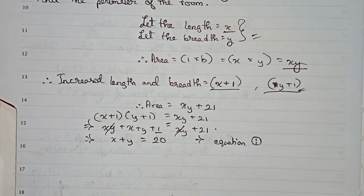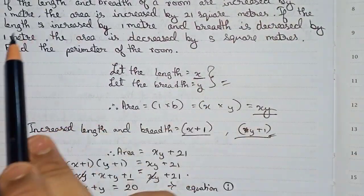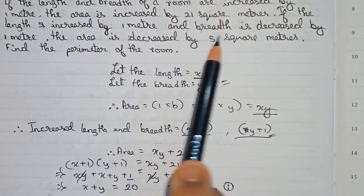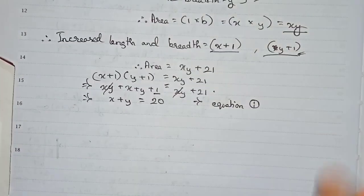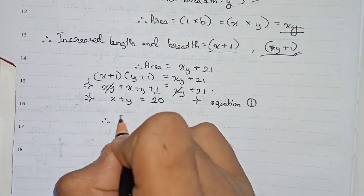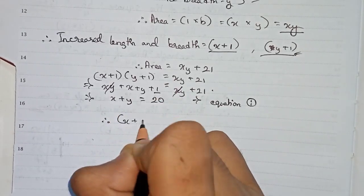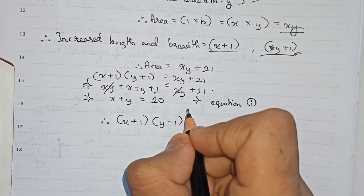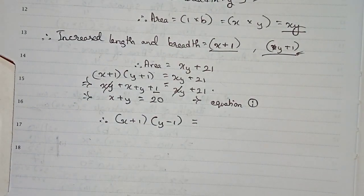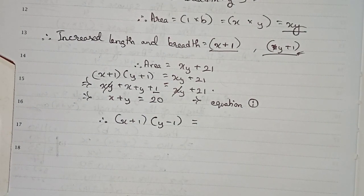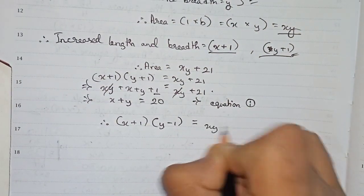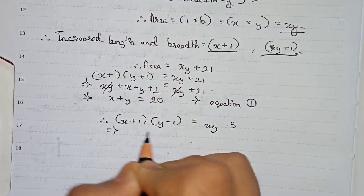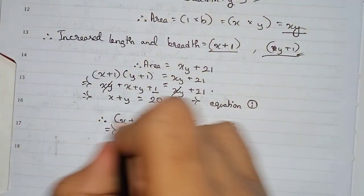For equation number 2, it is given that the length is increased by 1 meter and the breadth is decreased by 1 meter, and the area is decreased by 5 square meters. So the increased length is x+1 and the decreased breadth is y-1, giving a new area of xy - 5. We write: (x+1)(y-1) = xy - 5.